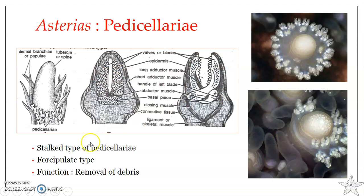The main function of the pedicillariae is to remove debris. They help in the capture as well as removal of debris and minute organisms that may settle on the body surface. Since Asterias rubens is found close to the substratum, there is a tendency for debris and minute organisms like larvae to settle on the body surface and interfere with respiration by covering the dermal branchia. The pedicillariae help in removing these debris and minute organisms from the dermal branchia and also the tube feet, cleaning up the whole surface of the Asterias rubens body.